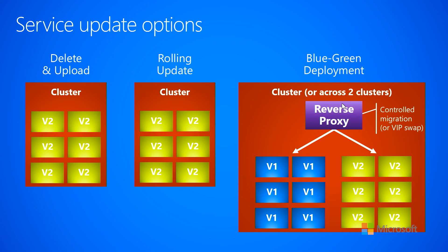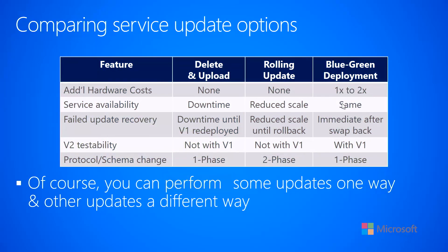On this slide I have a table that compares and contrasts these three different options. The first feature is additional hardware costs. The delete and upload option has no additional hardware costs — you're bringing down six instances and bringing them back up with new code, and you might even save a little since you're not charged for VMs during the brief downtime. For the rolling upgrade, there's also no additional hardware costs, because you're bringing down two V1 instances and bringing up two V2 instances, rolling across and using the same six instances of hardware.